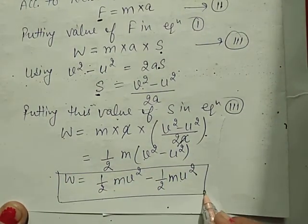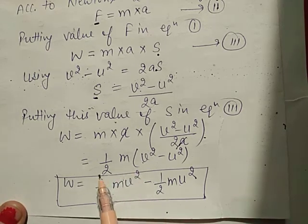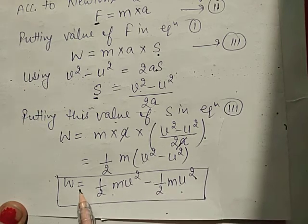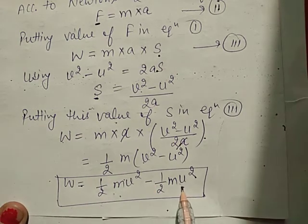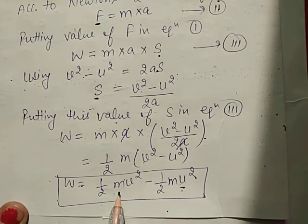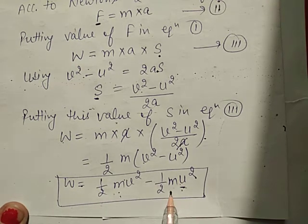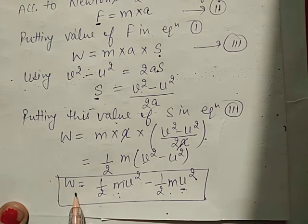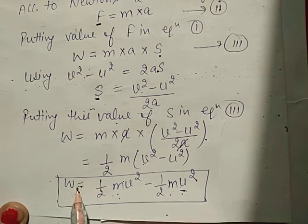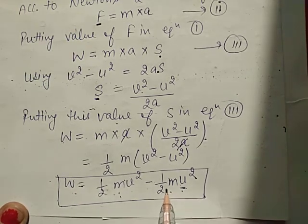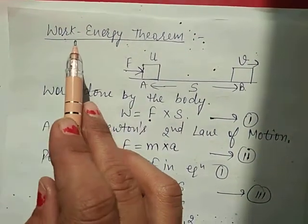So W = ½MV² − ½MU², which means the work done by the body equals the change in kinetic energy of the body — that is, final kinetic energy minus initial kinetic energy. This is called the work-energy theorem.